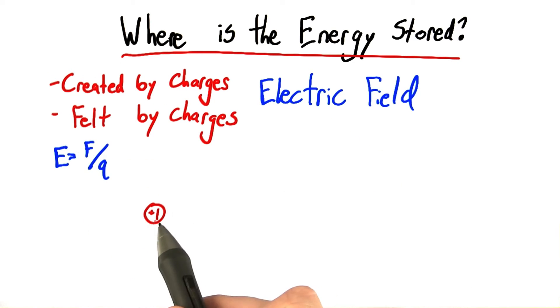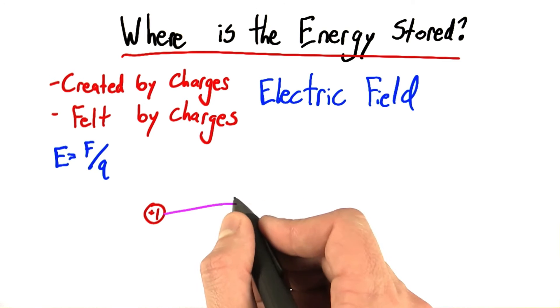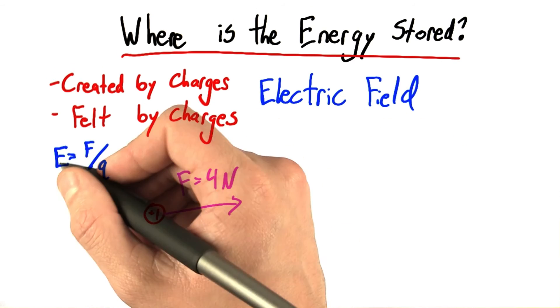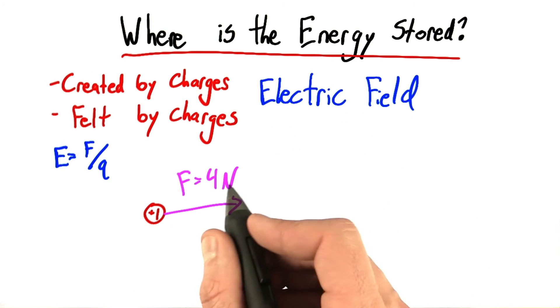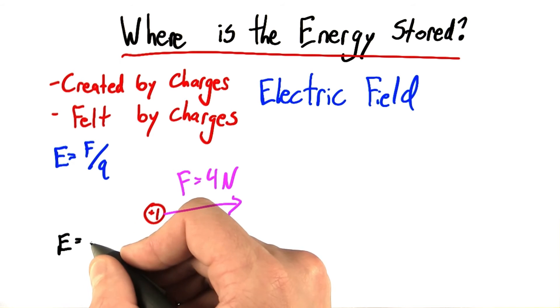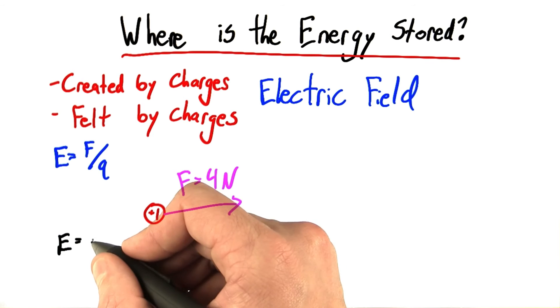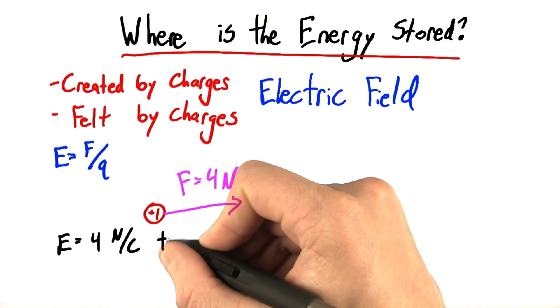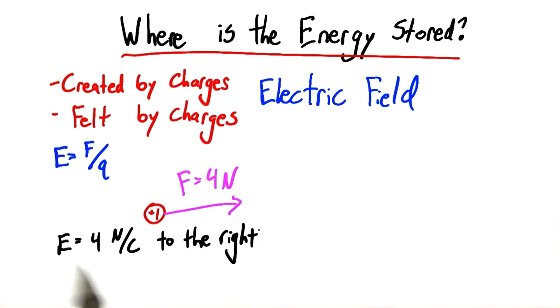Let's say we take our plus 1 Coulomb charge, set it down somewhere, and note that it feels a force to the right of 4 Newtons. Well, the electric field is just force over charge, 4 over 1, and both of those numbers are positive. So in this case, the E field, electric field, would be 4 Newtons per Coulomb. And maybe I'd want to say something like, to the right, because electric field is a vector. It has both a size and a direction.